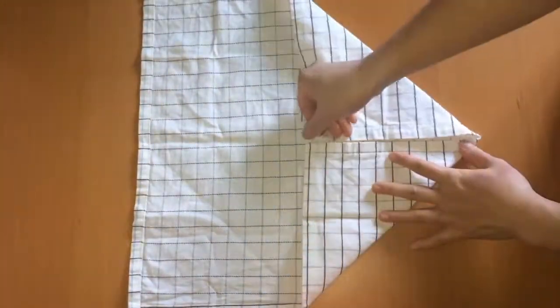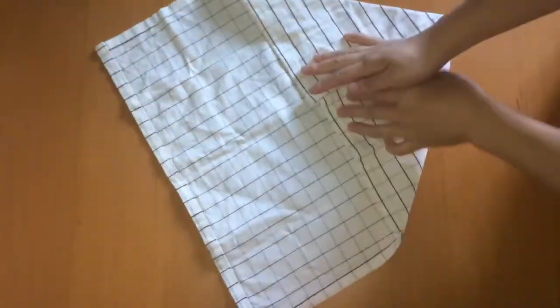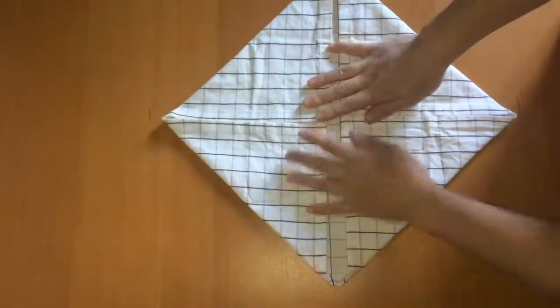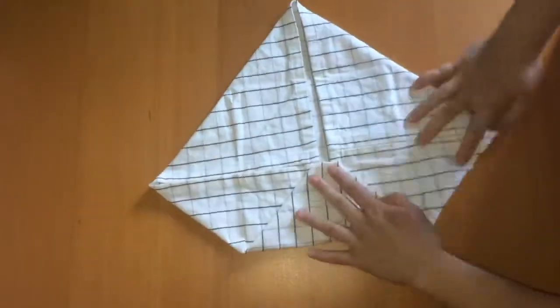Fold the corners of your napkin into the center to make a smaller square. Do this two more times on this same side.